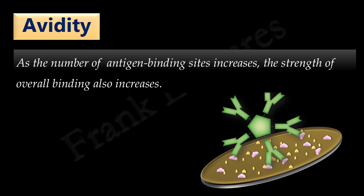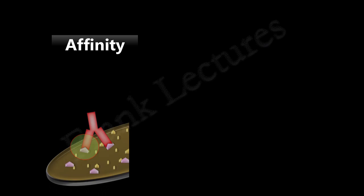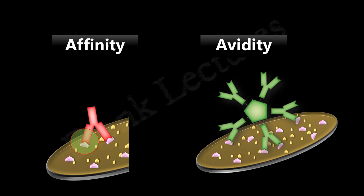This is of great significance because the stable antigen-antibody complexes formed will be eliminated from the body more efficiently. To summarize: affinity is the strength of binding between a single antigen binding site and a single epitope, whereas avidity is the overall strength of binding between an antigen and an antibody, involving all the antigen binding sites of the antibody.